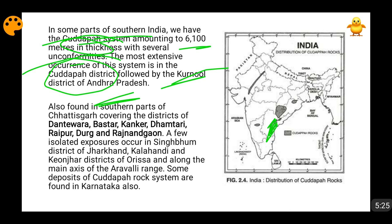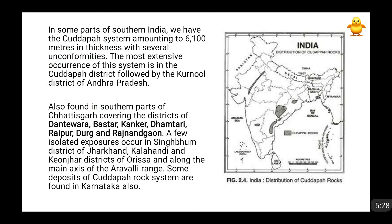These rocks are also found in the southern parts of Chhattisgarh, in the districts of Dantewada, Bastar, Kanker, Dhamtari, Raipur, Durg, and Rajnandgaon. Dantewada and Bastar are very famous for Maoist activities. Here you can see the map of Chhattisgarh — in the southern parts of Chhattisgarh these districts occur, and there these Kudappa rocks are found.